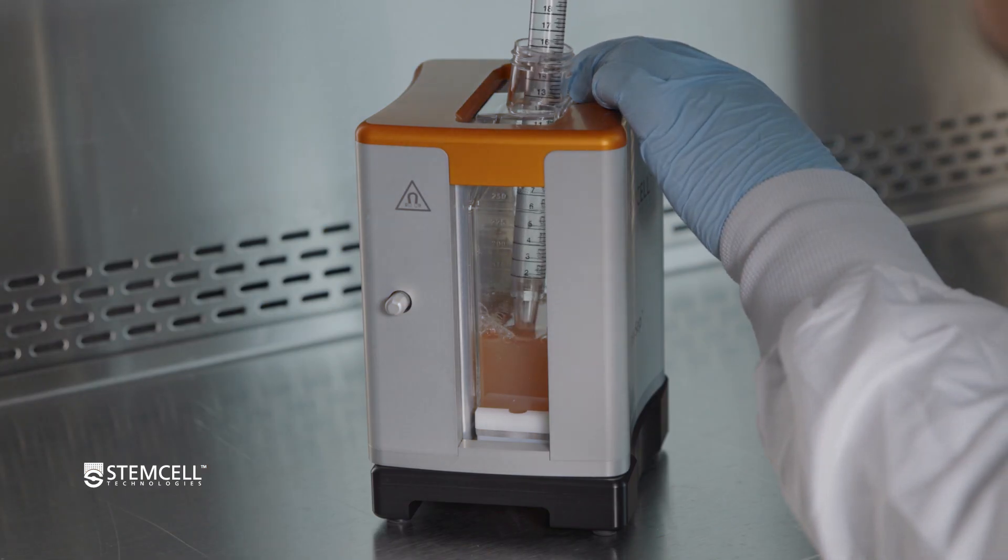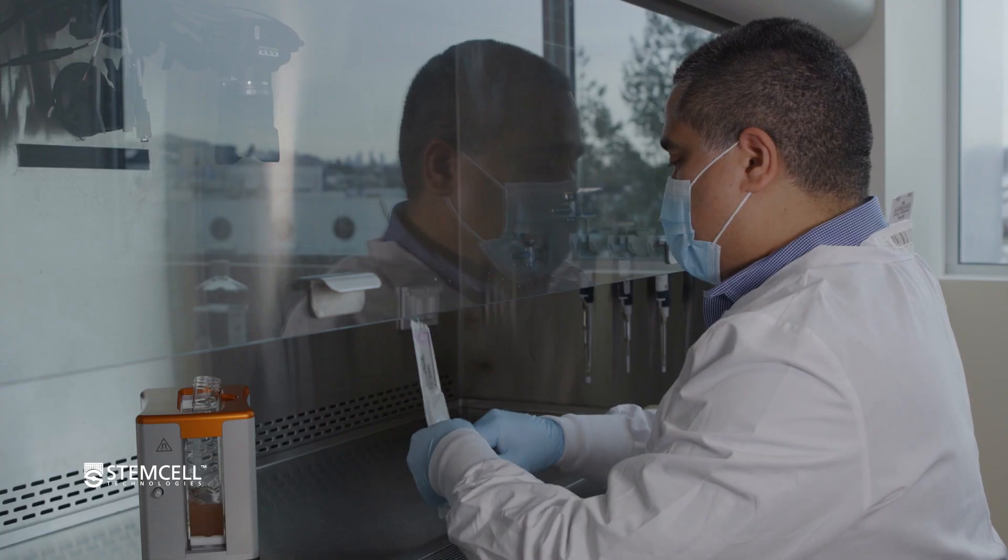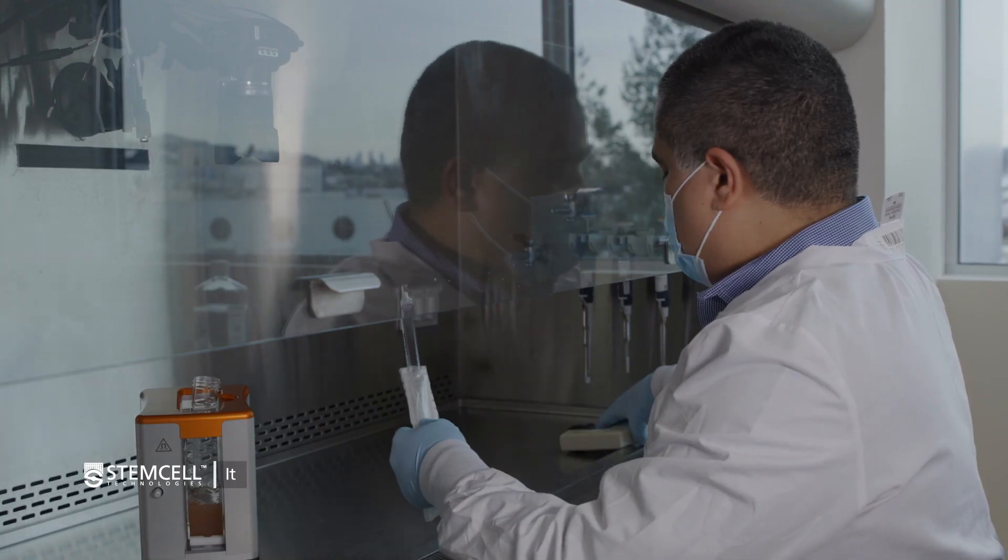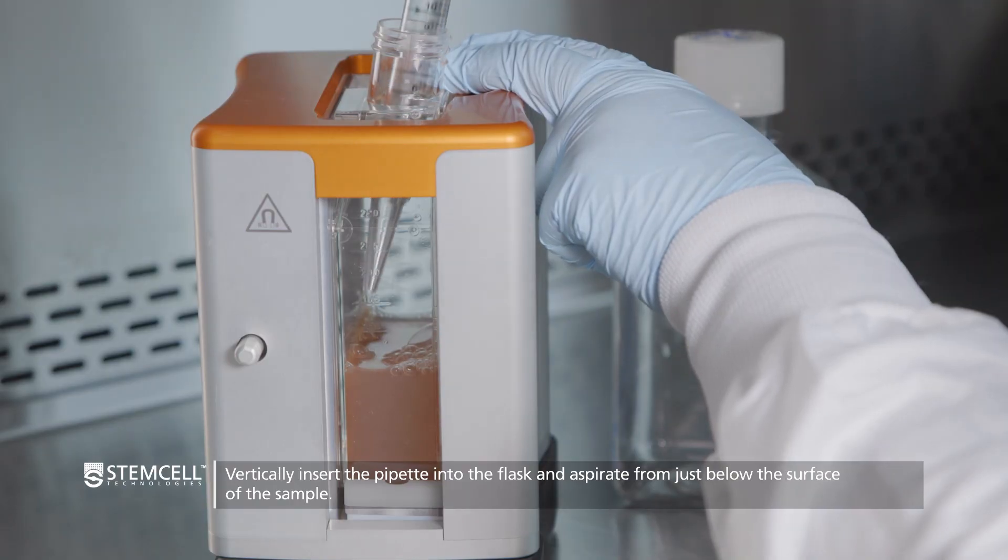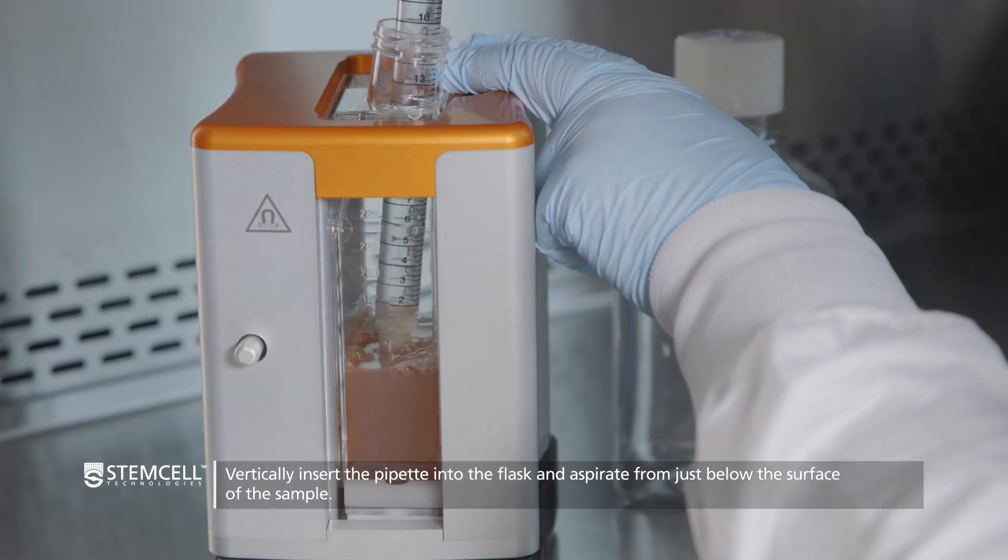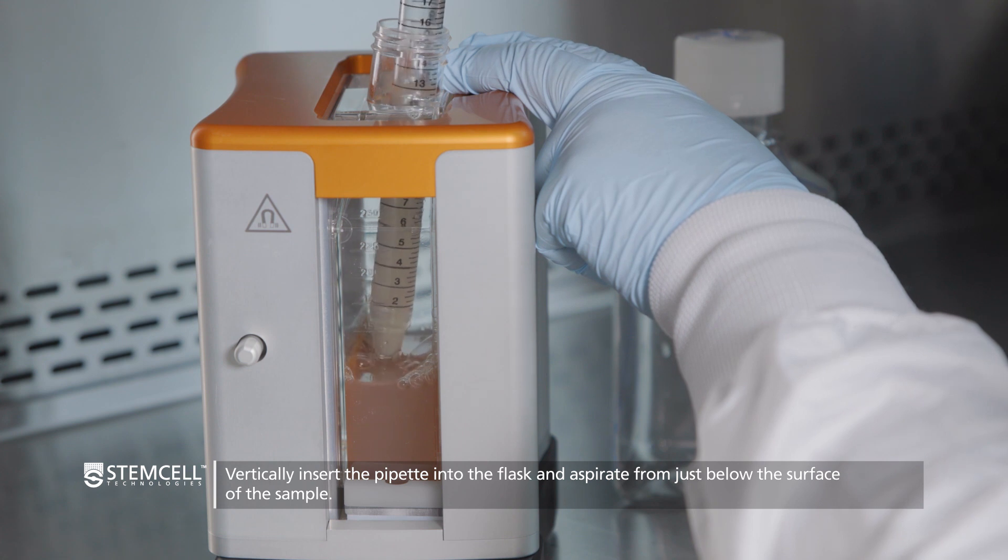Follow these steps to aspirate the supernatant out of the T75 flask while it sits in the magnet. To maximize the recovered volume, we recommend first aspirating with a 25ml pipette. Vertically insert the pipette into the flask and start to aspirate from just below the surface of the sample.